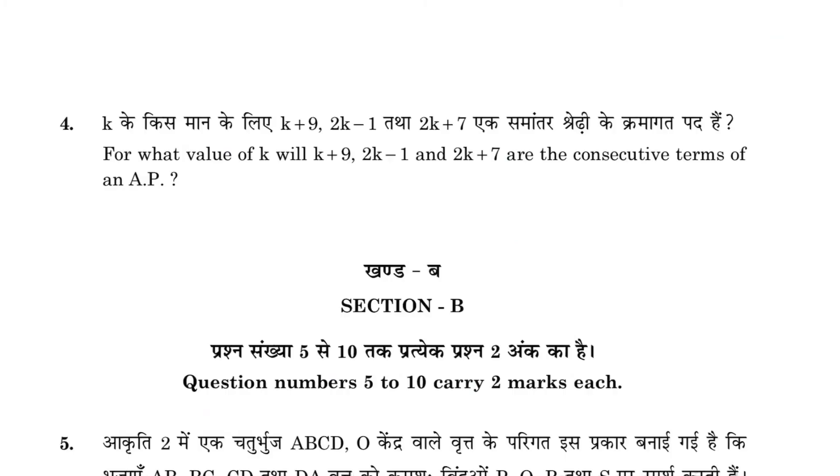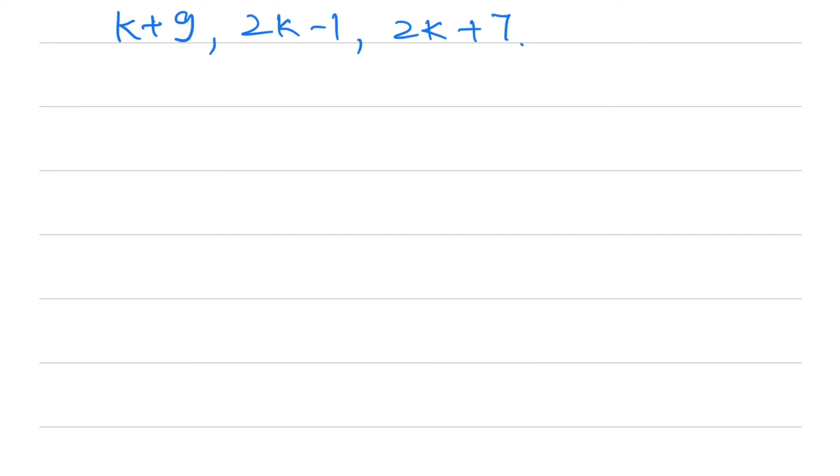Question number four: We have to find the value of k. We are given three terms of an AP: k+9, 2k-1, and 2k+7. They are in AP, so the second term minus the first term should equal the third term minus the second term. This is the common difference d.